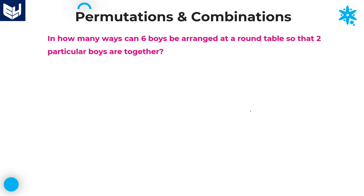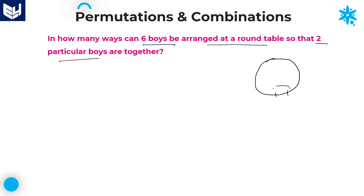Let us move on to the next question. In how many ways can 6 boys be arranged at a round table so that 2 particular boys are always together? We take a circle with total 6 boys. Since 2 particular boys are always together, we take those 2 boys as a single entity. That leaves 4 remaining boys plus 1 single entity = 5 members. These 5 members can be arranged around a table in 4 factorial ways, since n−1 factorial applies.